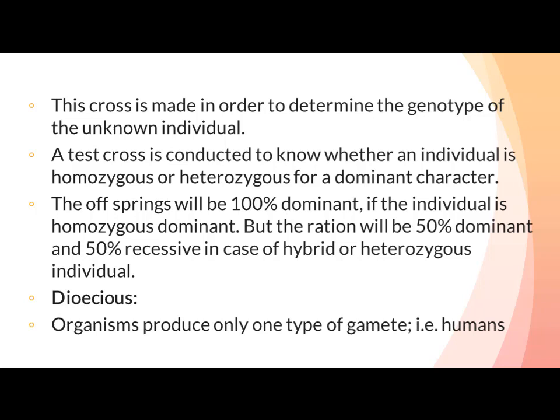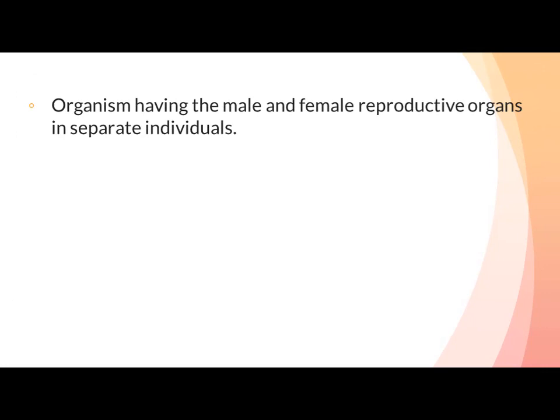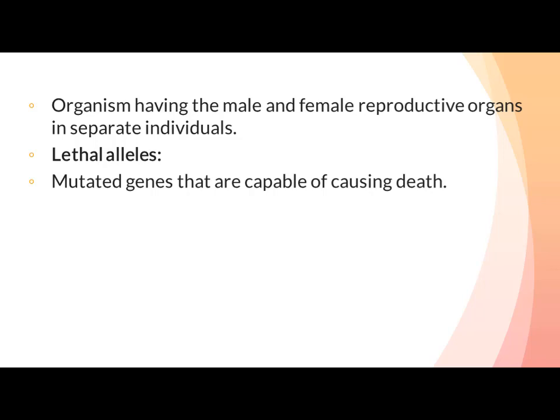Dioecious: Organisms that produce only one type of gamete, or organisms having male and female reproductive organs in separate individuals, are called dioecious. ایسے organisms جن میں male اور female reproductive organs الگ الگ individuals میں ہوں انہیں dioecious کہتے ہیں۔ Lethal Alleles: Mutated genes that are capable of causing death are called lethal alleles — یہ وہ genes ہوتے ہیں جن میں mutation ہوئی ہو اور وہ organism کی death cause کریں۔